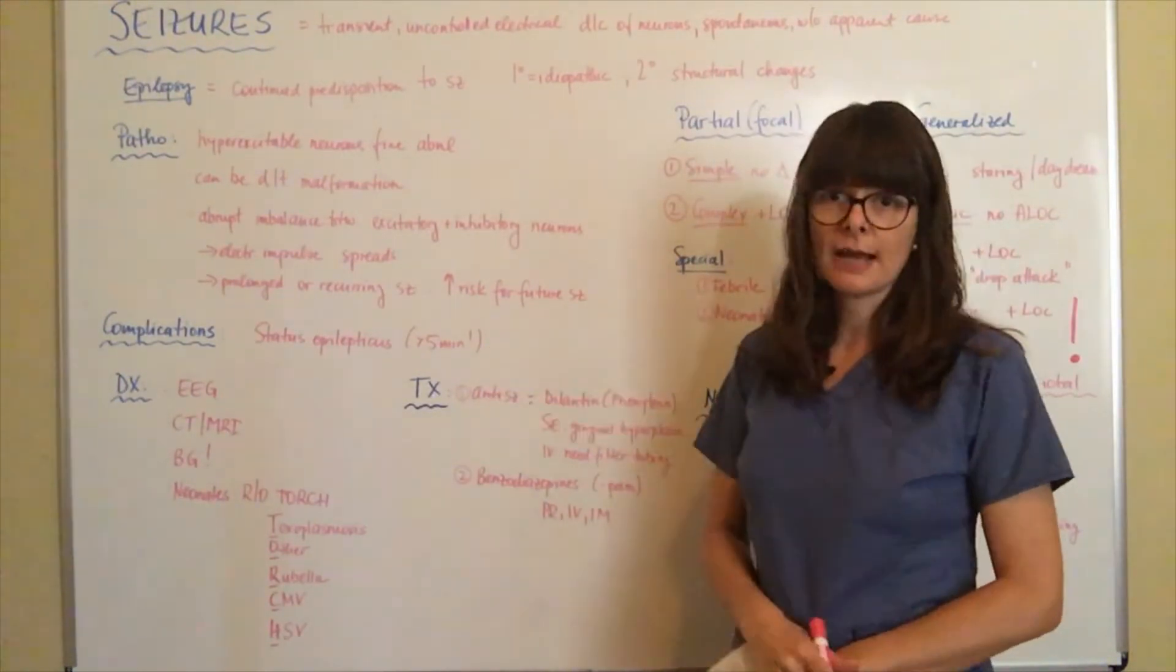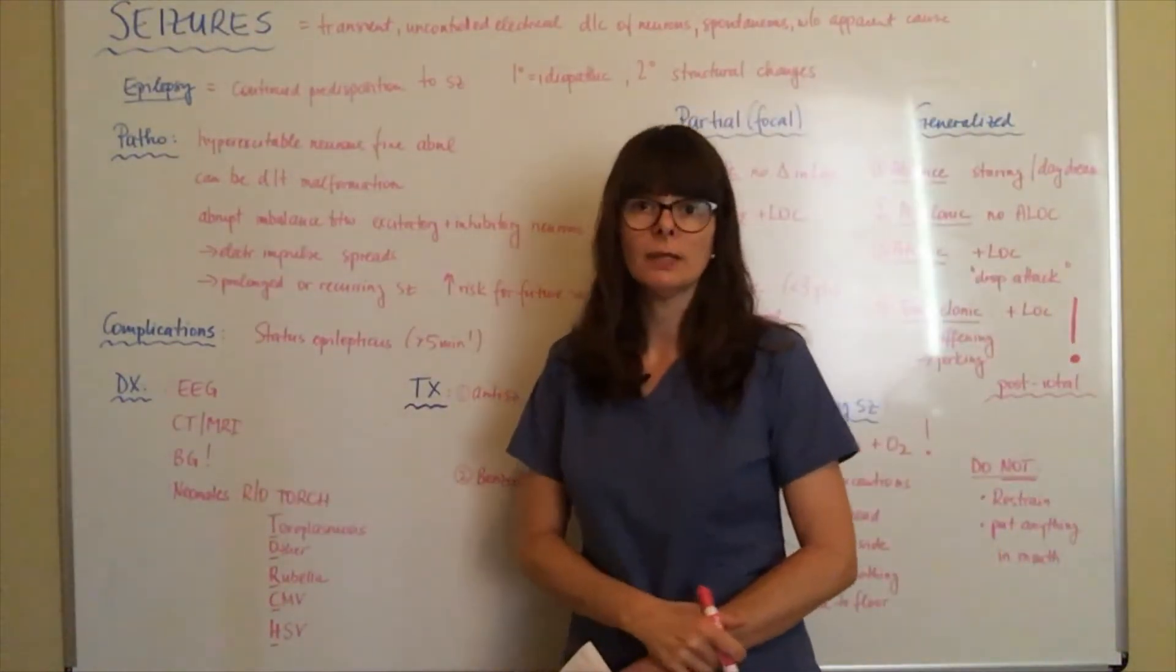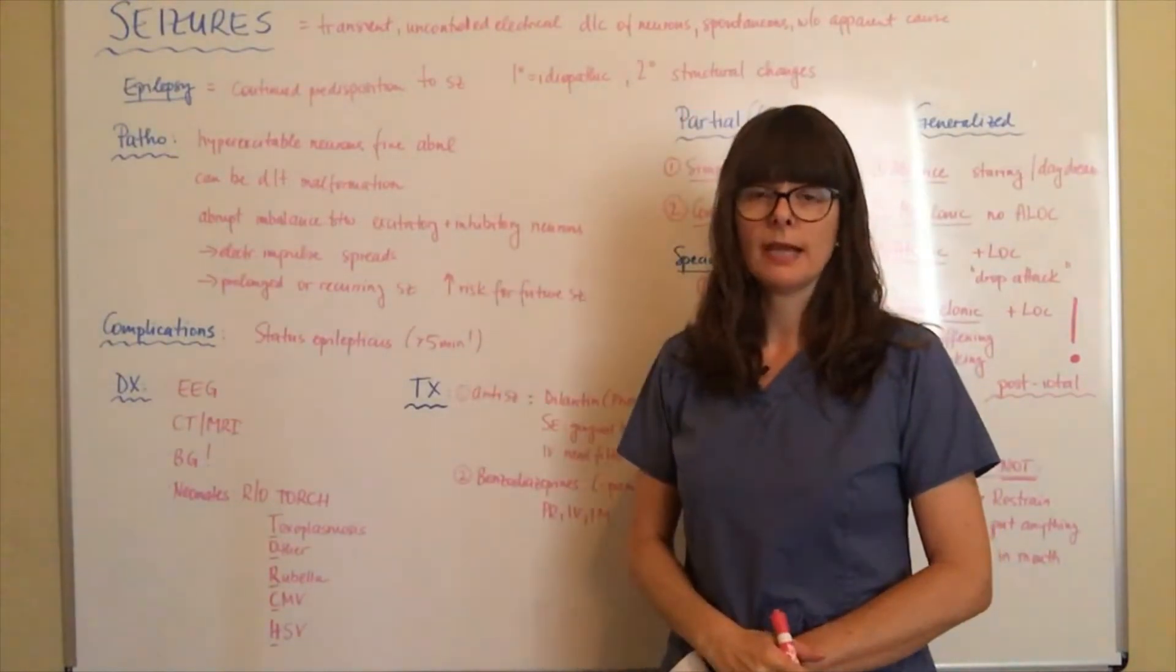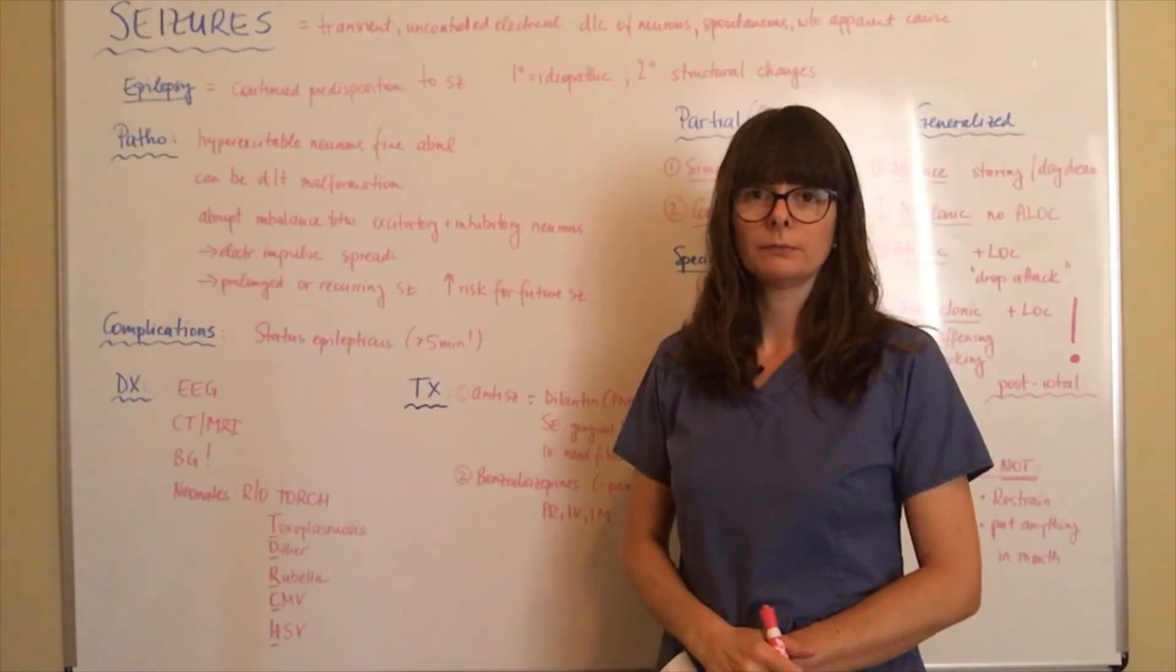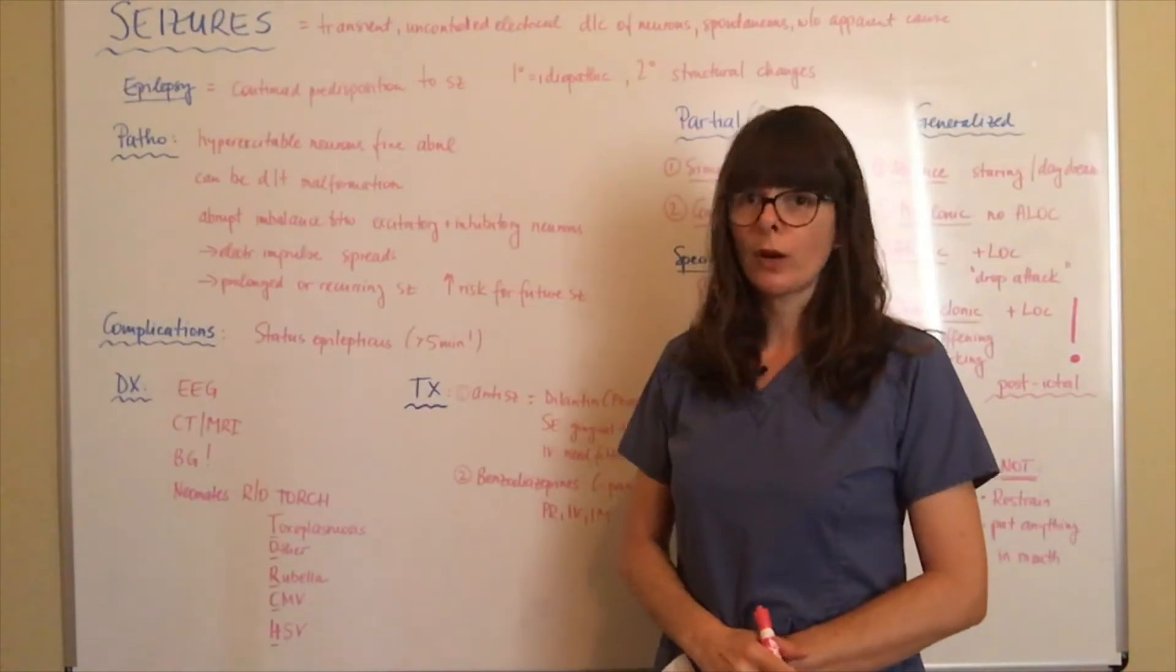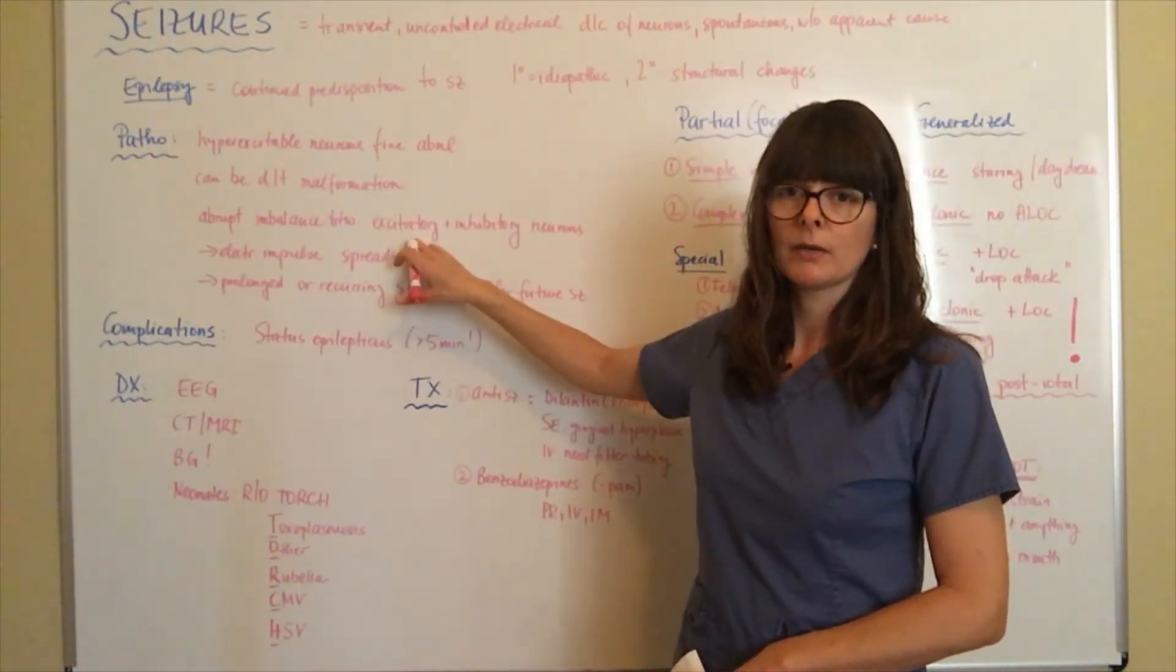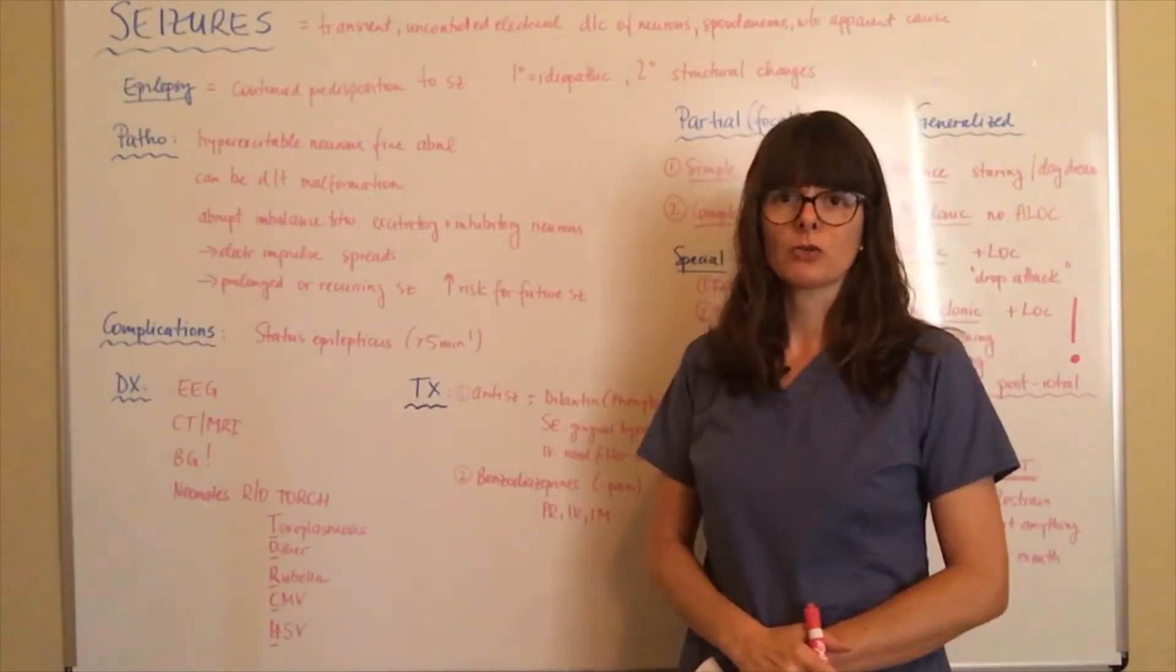How are seizures diagnosed? First and foremost, we need to perform an EEG, an electroencephalogram, which basically means that a multitude of electrodes are hooked up to the patient's head. Then a special machine will measure the brain waves to try and identify where this area of these excitatory neurons is located. They can determine the types of seizures that the patients might be having and then initiate treatment from there.